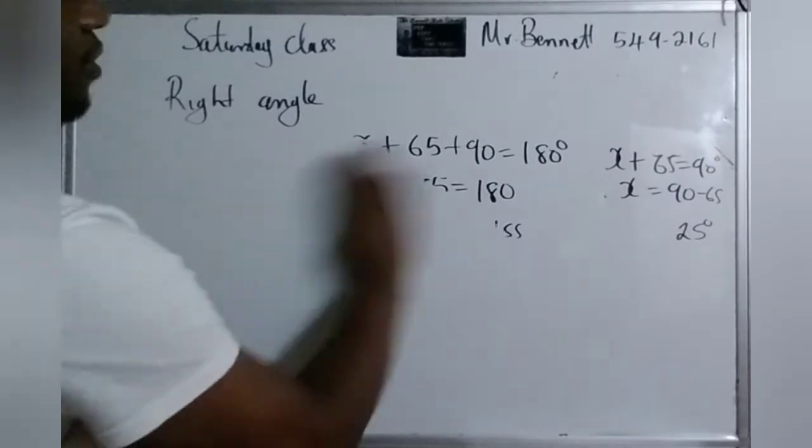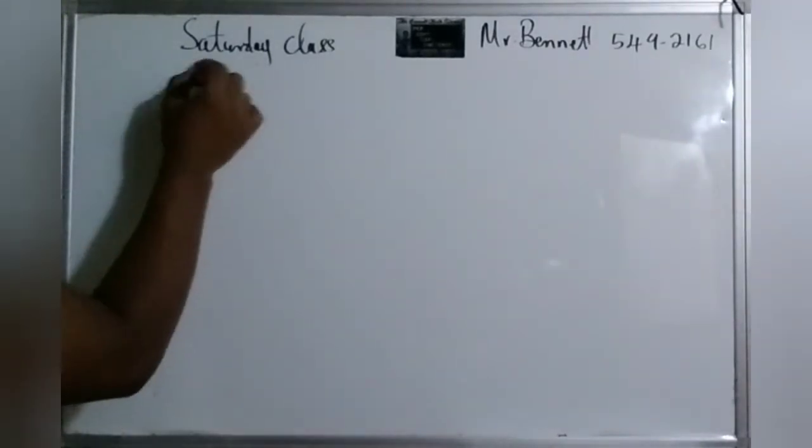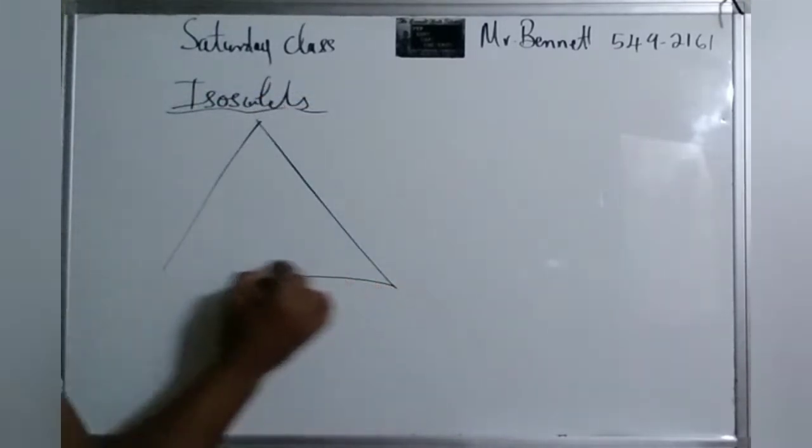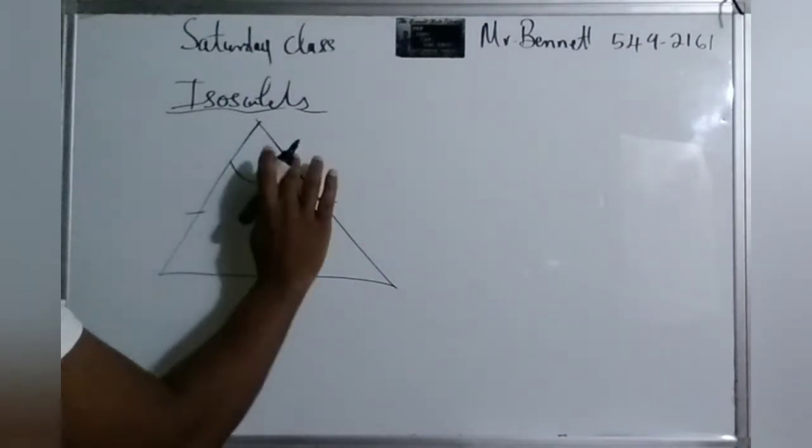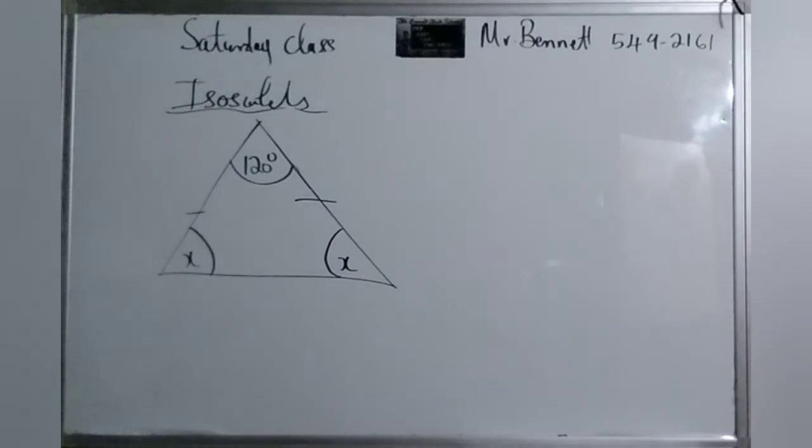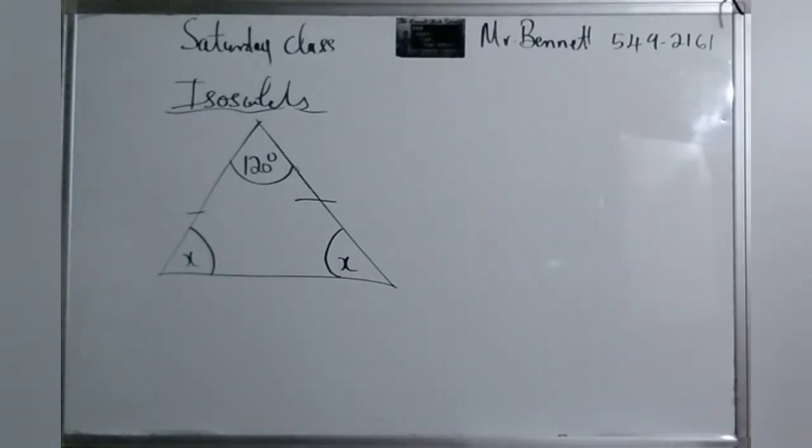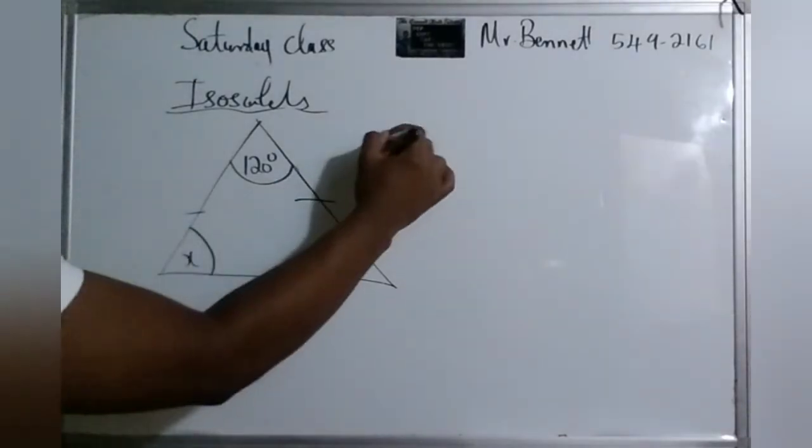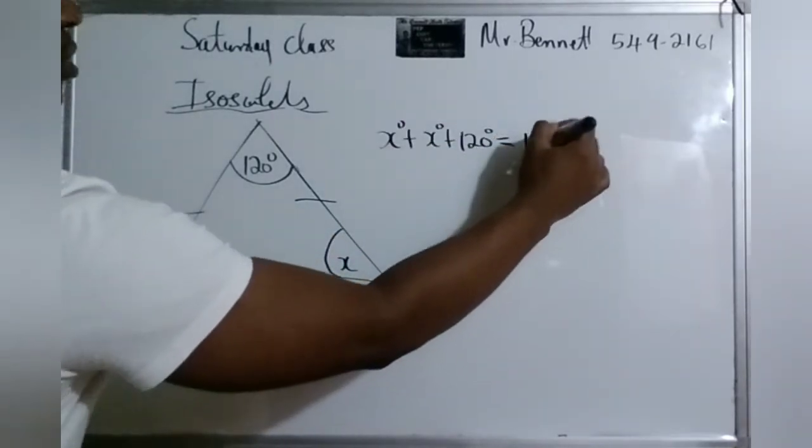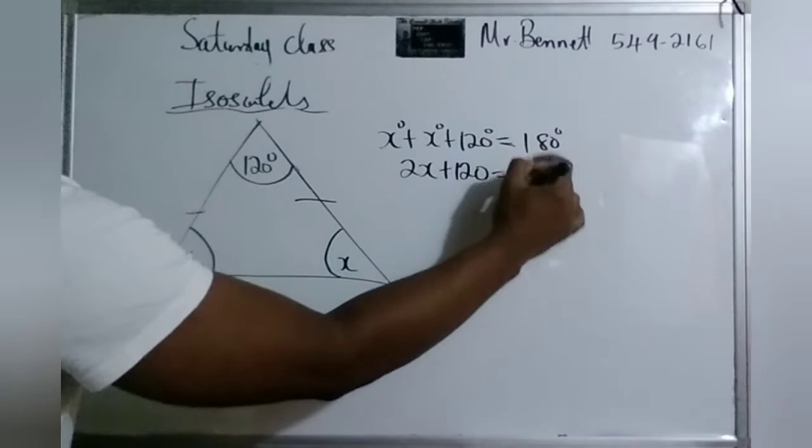All right. So it does need that. Say we have an isosceles. And we are given an angle. How could we find this one? We are given this angle to the 120. This is x and that is x. How could we do it? Always right, but we know what we know, right? We know that x plus x plus 120 is equal to what? 180 degrees.